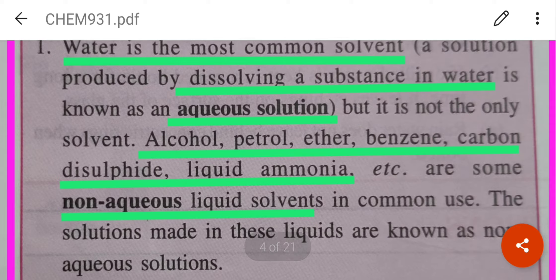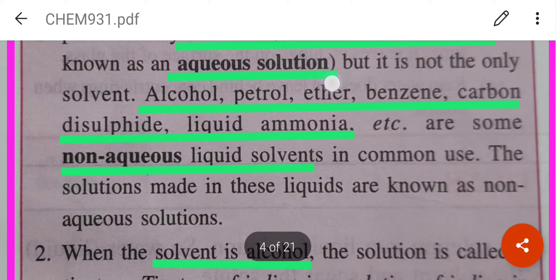If a solution has water as the solvent then it is called aqueous. But there are other solutions in which other liquids act as the solvent — for example alcohol, petrol, ether, benzene, etc. They are called non-aqueous liquid solvents. When the solvent is alcohol the solution is called tincture, and tincture of iodine is a solution of iodine in alcohol.